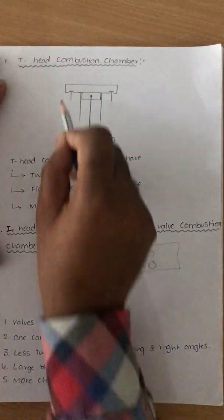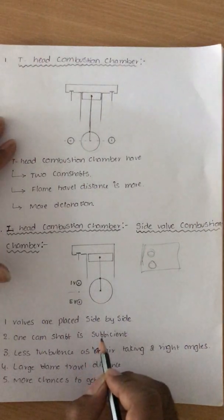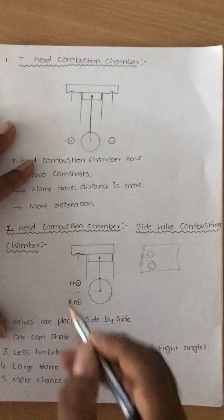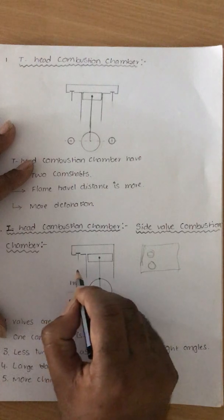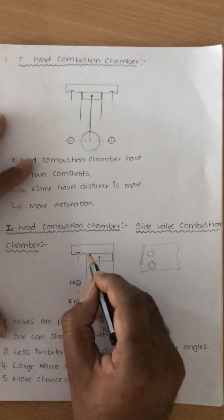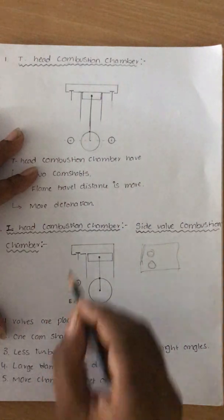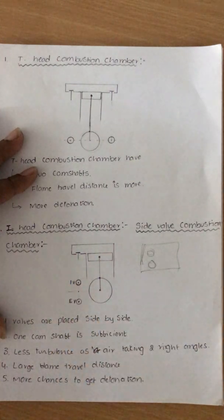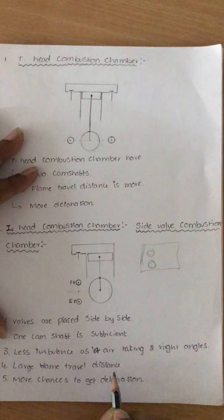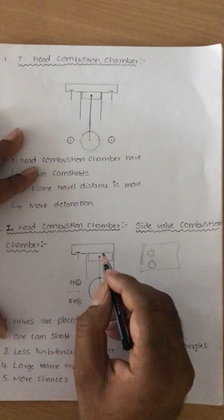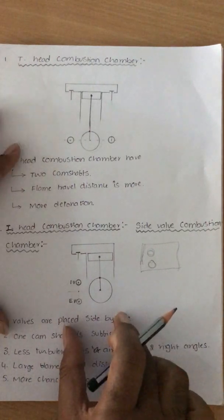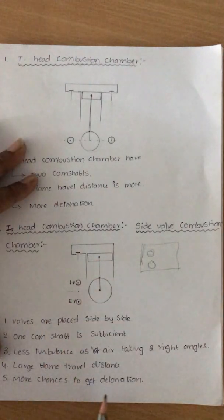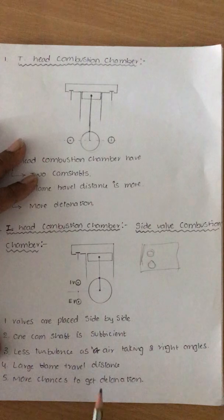This is an advantage over the T-head, as only one camshaft is sufficient. However, the disadvantage is less turbulence because the air has to take two turns — two rectangles — making turbulence very low. There is also a large flame travel distance. When compared to the T-head this gives less flame travel, but it is still not sufficient as detonation chances remain high.